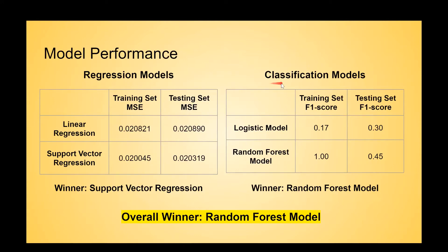Let's now take a look at the classification models. The metric we use for these models is F1 score because it provides a nice balance between precision and recall. The logistic model only scored 0.17 for the training set and 0.3 for the testing set. The random forest model reached an F1 score of 1 for the training set and 0.45 for the testing set. It is clear that the random forest model is the winner for the classification models.